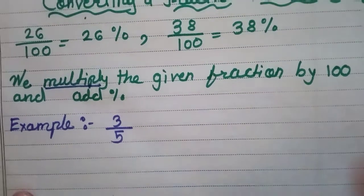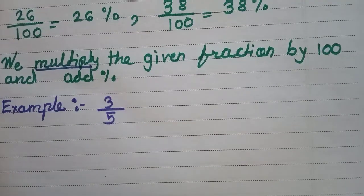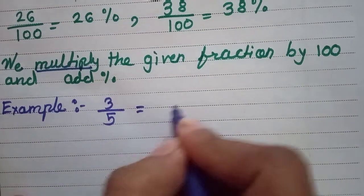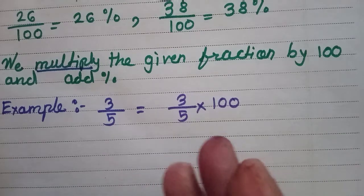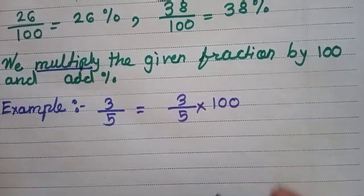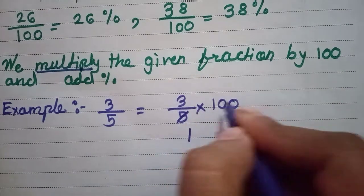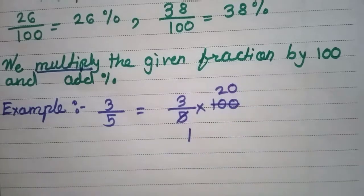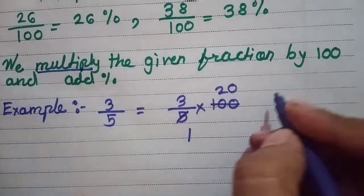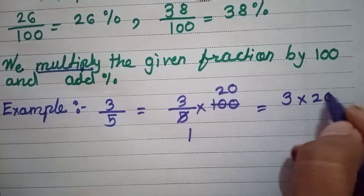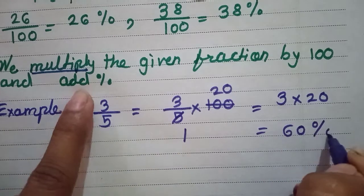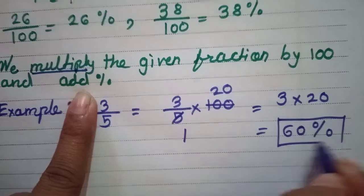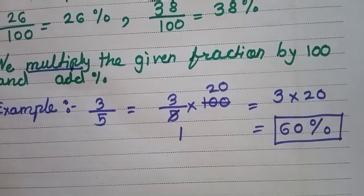Let us see Example 1: 3 by 5. We multiply 3/5 by 100. We can divide: 5 goes into 100, giving us 20. So 3 multiplied by 20 gives 60. The denominator becomes 1, so we don't need to write it. Our answer is 60.